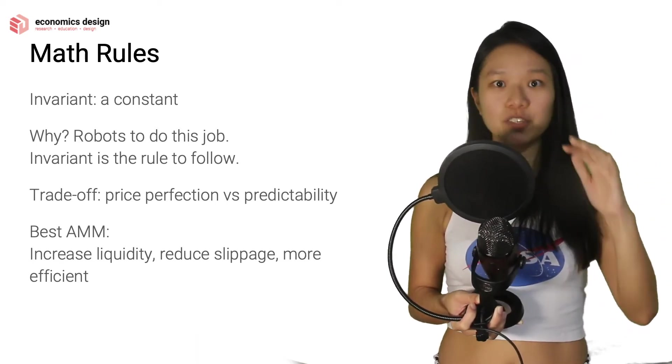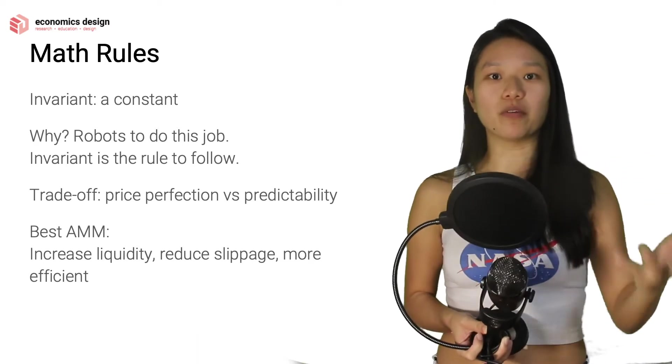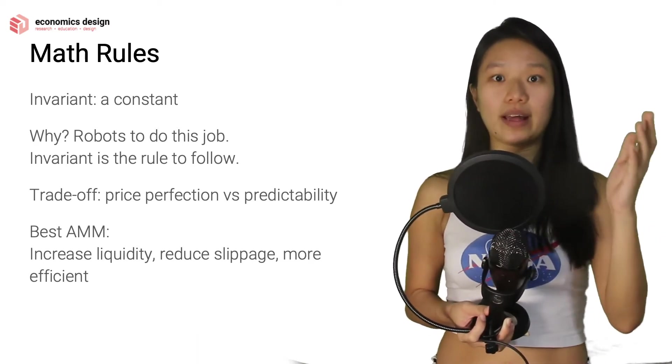So you want some form of rules that robots can follow. And the robots are super smart at aggregating information that comes in, but you want them to follow some form of rules. And the form of rules is that there needs to be a constant that the robot has to follow.